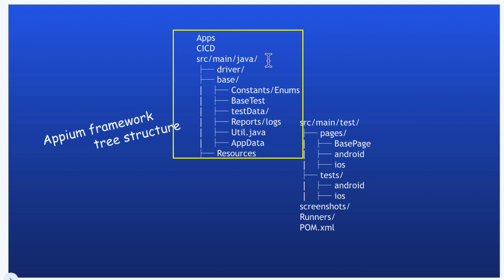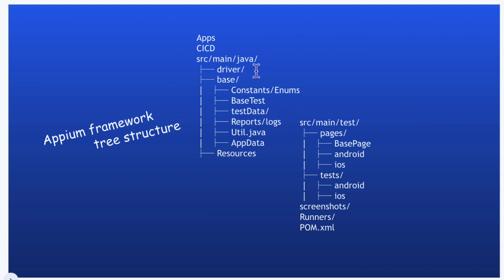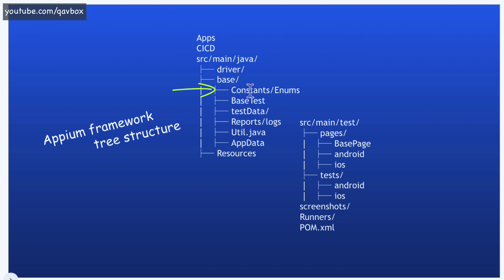The source/main/java section will hold the driver concept — how the driver will launch your Android or iOS simulators or real devices. All the capabilities and everything related to driver instantiation would remain inside this, providing the driver object to different other folder structures. There would also be a base package, which consists of different components, files, or packages. It would hold your constants and enums — for example, which environment you are dealing with, the app username and password, or the URL of your Appium server.